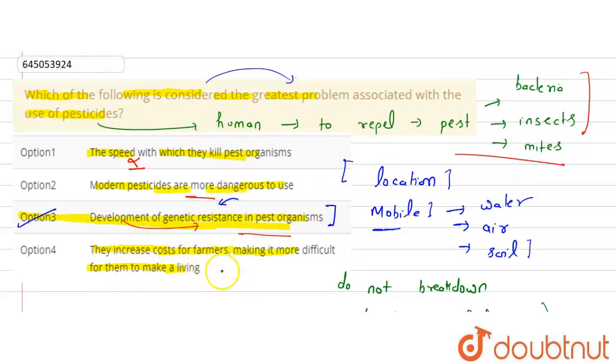Or then the cost increases, making it more difficult for them to make a living. This is true. Costs will have a lot of difference between farmers. But the greatest problem here is option number 3.